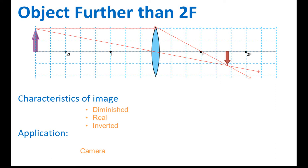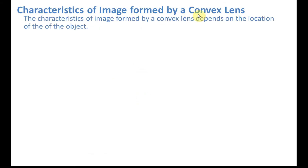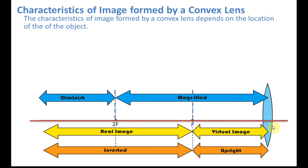You also need to know the characteristics of the image formed for different object positions. Many students find this hard to remember, so let's look at a summary. The characteristics of the image formed by a convex lens depend on the location of the object. In front of the lens, we divide the space into three sections using F and 2F as dividers.